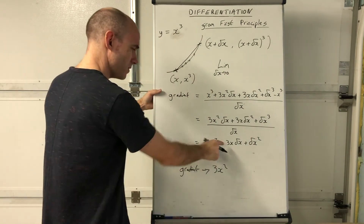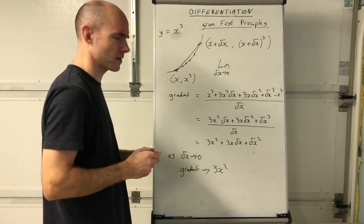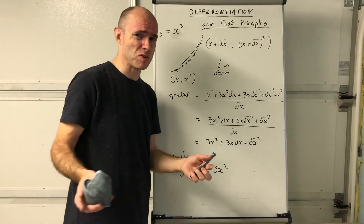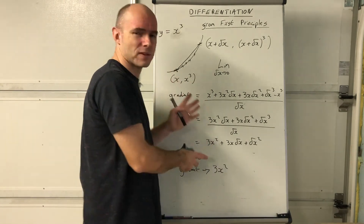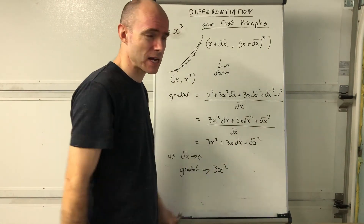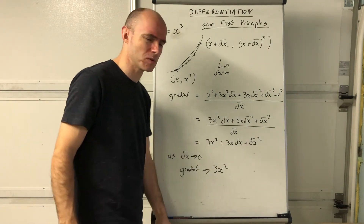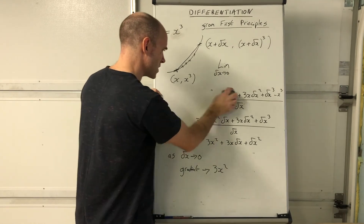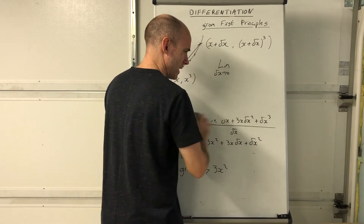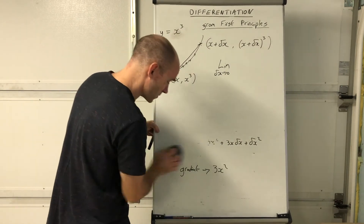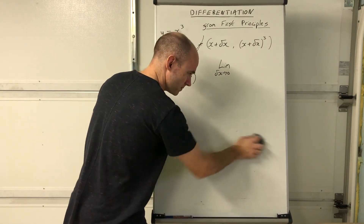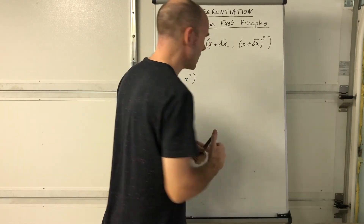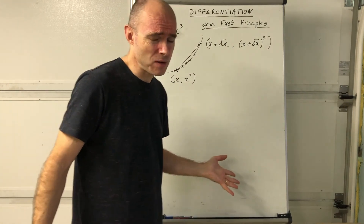You can do the same for any function you wish. That's basically what first principles is - I've given you the easiest version I could think of. There are other versions using h to represent small changes in variable, and slight other variations, but since this video isn't aimed at syllabuses that require first principles, I've done it this way just to give you some understanding of how it works.